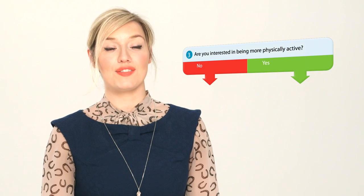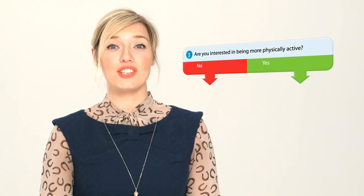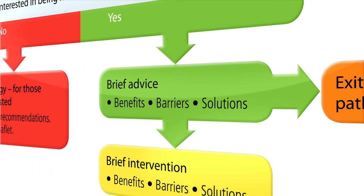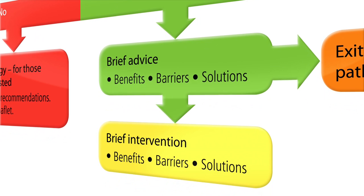If your patient's total physical activity is less than 150 minutes, the next step is to ask question three, which determines their readiness to change. Every patient not meeting the guidelines should reach question three of SCOT PassQ: are you interested in being more physically active? If your patient indicates they are ready to consider increasing their activity levels, there are several options. It may be appropriate to simply highlight the guidelines, or you could continue on the pathway to deliver brief advice or brief intervention.